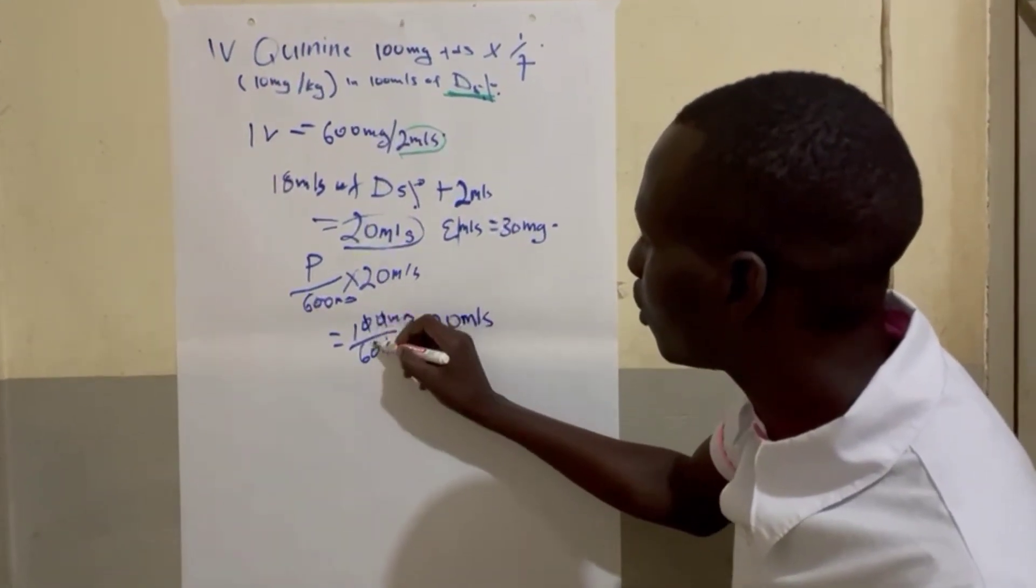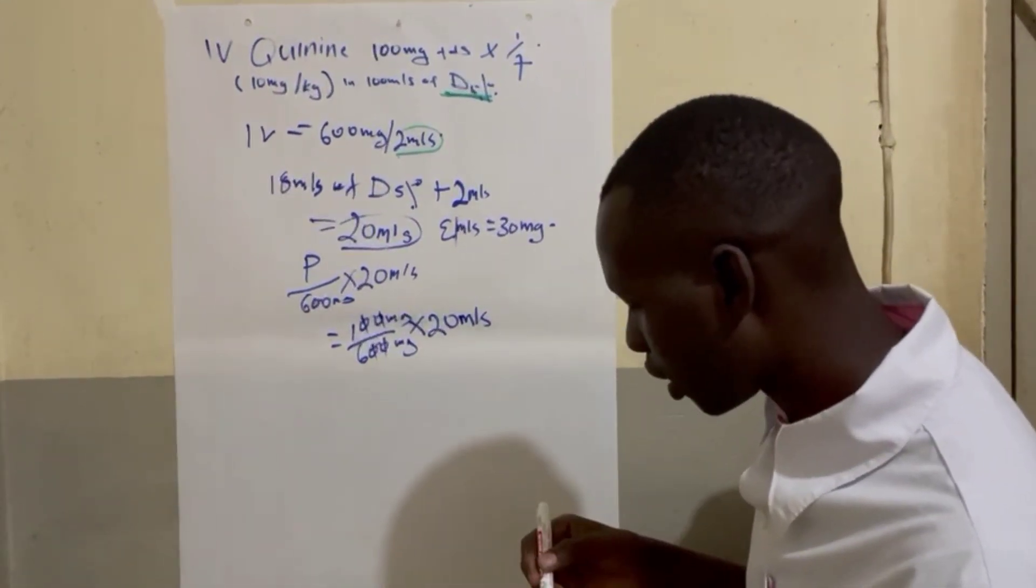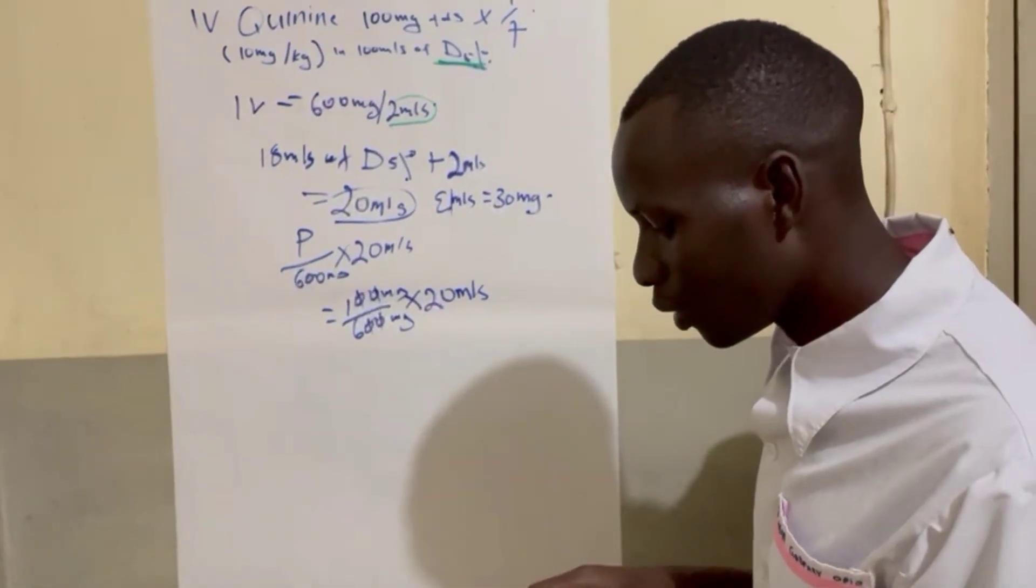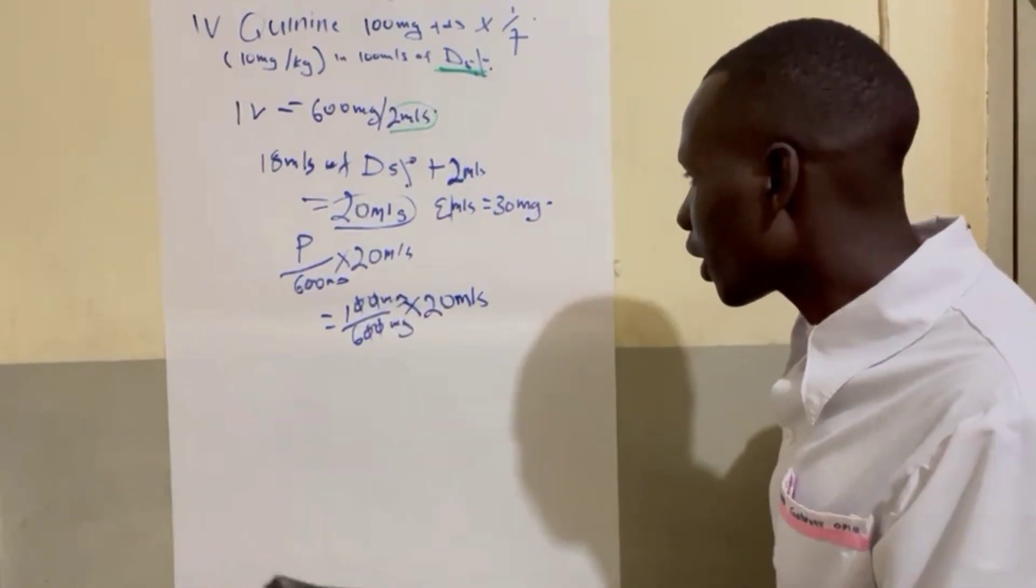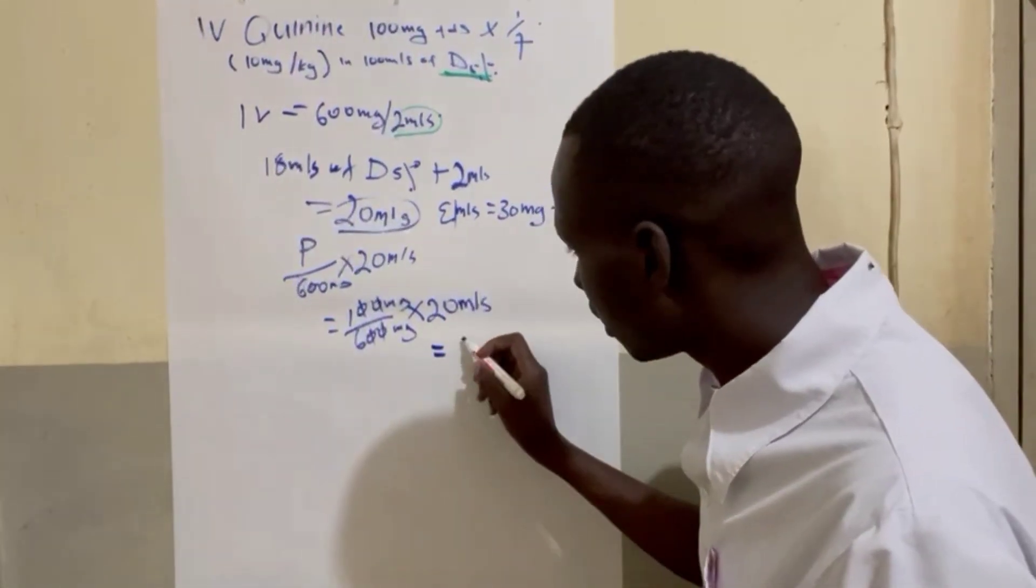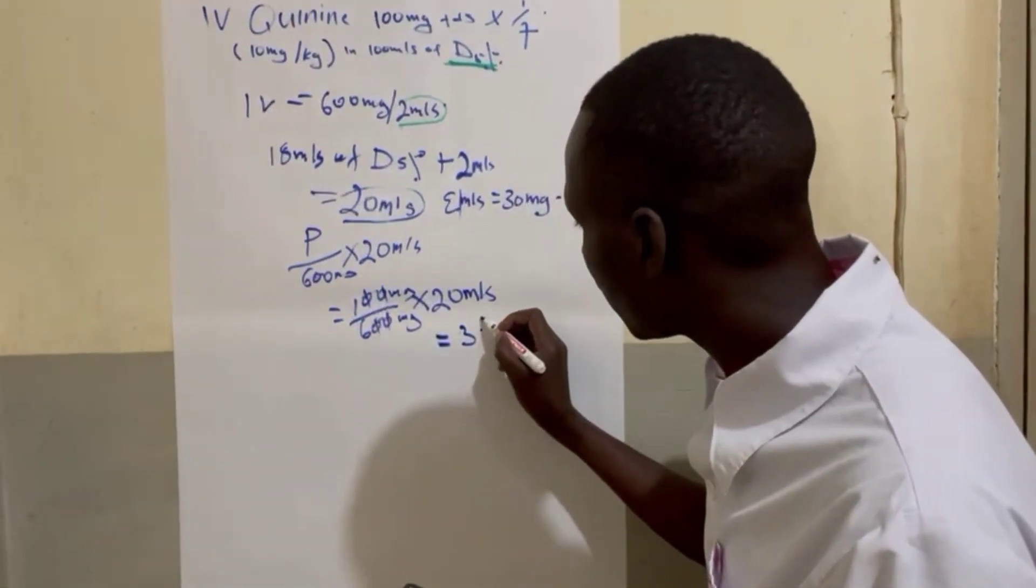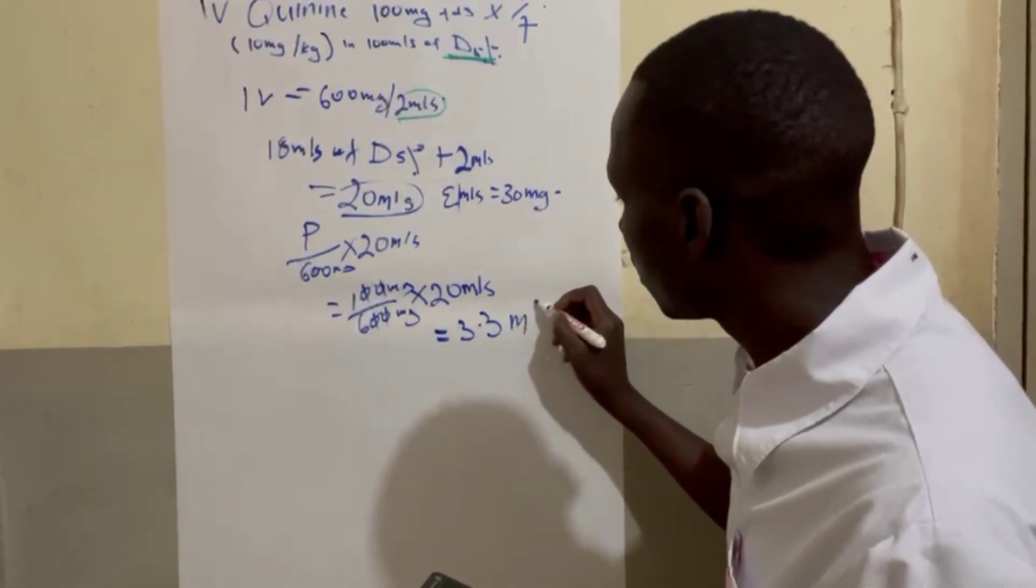So if we calculate this one we will get 100 divided by 600 times 20. So we are going to aspirate 3.3ml.